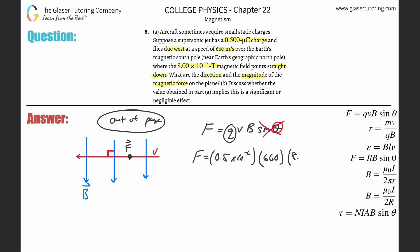They gave it to you in tesla. That is the standard unit for magnetic field here. And literally just take out the calculator and plug it in: 0.5 times 10 to the minus sixth times 660 times then 8 times 10 to the minus fifth.